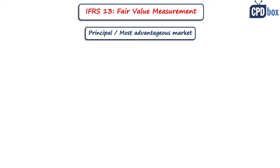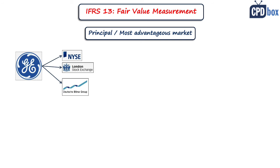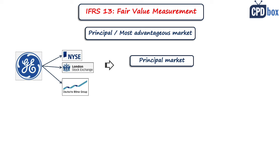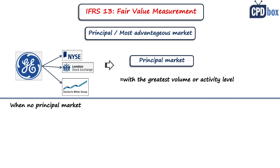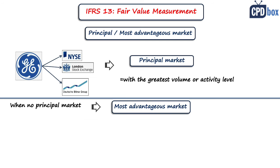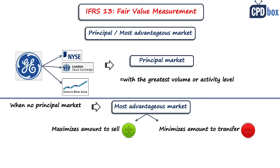Fair value measurement assumes that the transaction occurs either on the principal market or, if unavailable, the most advantageous market. Because the same asset or liability can be traded in multiple markets, an entity should first look to the principal market — the one with the greatest volume or level of activity. If there is no principal market, the most advantageous market is the one that maximizes the amount received to sell the asset or minimizes the amount paid to transfer the liability, after considering transaction and transport costs.